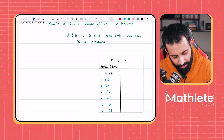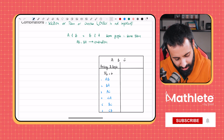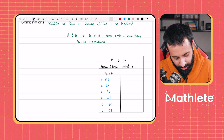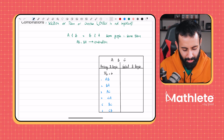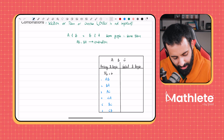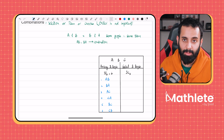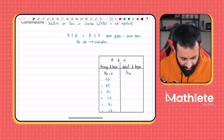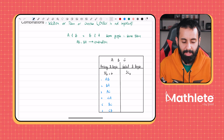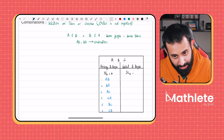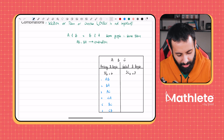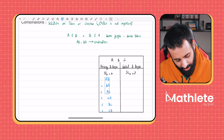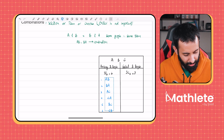Now if we talk about combination — selecting two people instead of arranging them — we use the C key on your calculator, which is shift and then the division sign. 3C2 equals 3. Why the difference? Why do we have 3 instead of 6?